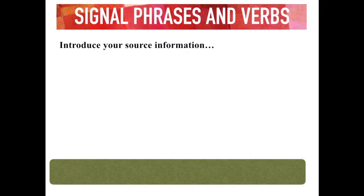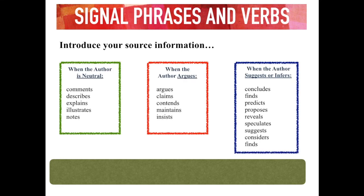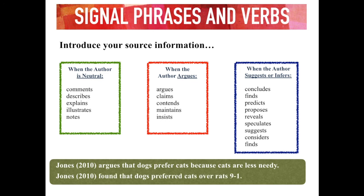One way to make your discussion of the existing research flow is to introduce information with different signal phrases and verbs. You might start a sentence with 'according to so-and-so,' but you don't want to do that all the time. There are a lot of other ways to introduce that information. Here are some signal verbs that can help your lit review flow a little bit better. When it comes to the researcher's argument or recommendations, you usually use the present tense — for example, 'Jones argues that dogs prefer cats because cats are less needy.' But when you're talking about anything that actually occurred during the course of the study, you use the past tense — for example, 'Jones (2010) found that dogs preferred cats over rats 9 to 1.'